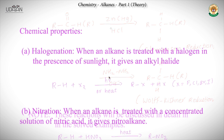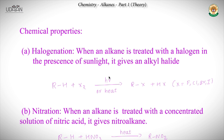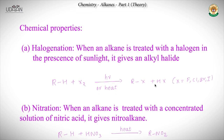Now let's look at some chemical properties of alkanes. The first and most important reaction is halogenation. In halogenation, an alkane is treated with a halogen like chlorine, fluorine, bromine, or iodine in the presence of sunlight or heat. This gives an alkyl halide and an acid HX.